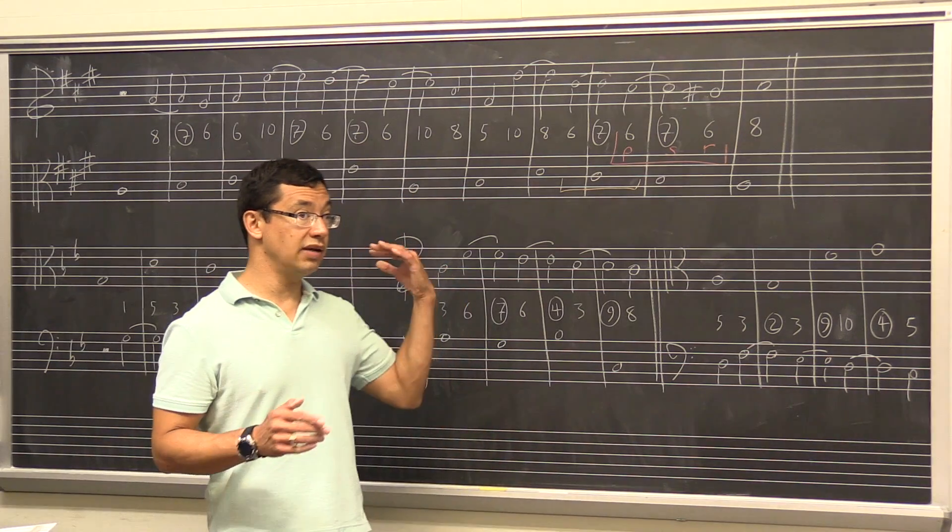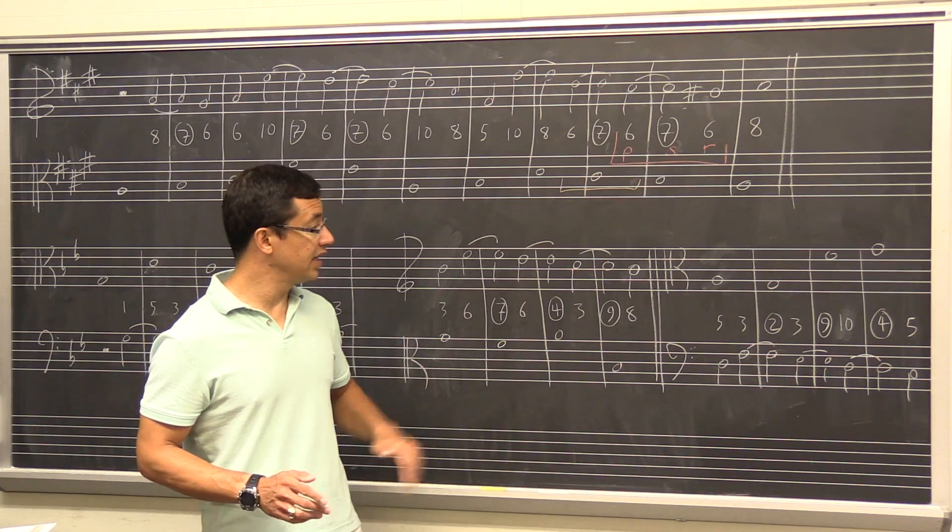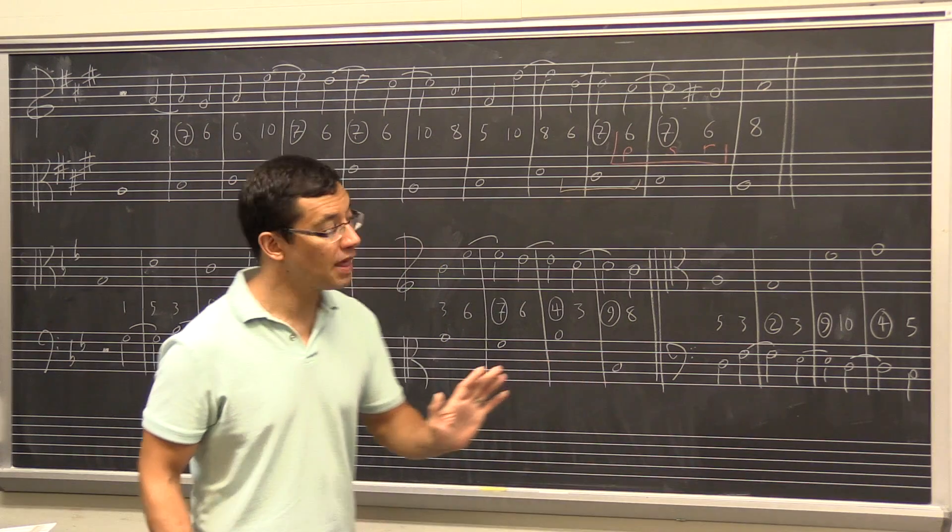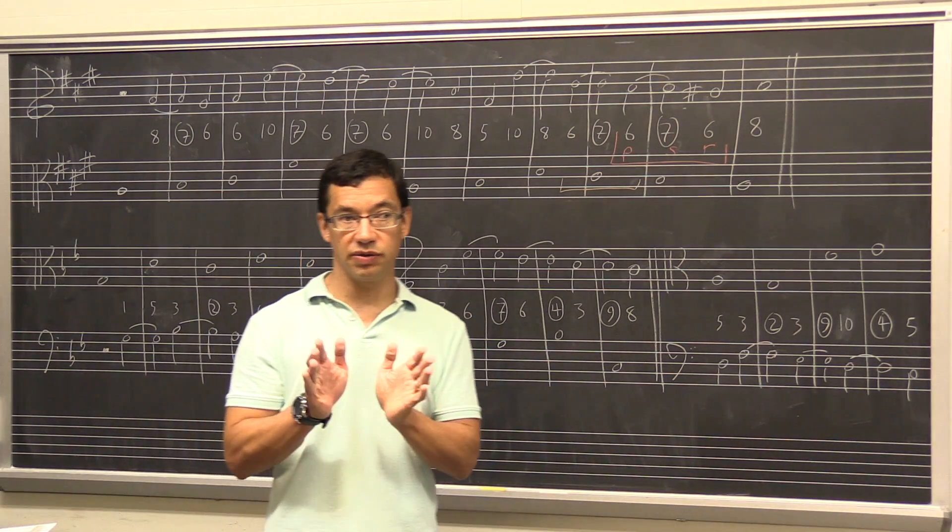So those are our tools. Upper counterpoint: seven-six, four-three, nine-eight. Nine-eight use sparingly. Lower counterpoint: two-three, nine-ten. Four-five use sparingly. Another option, another possibility. So those are the main things we want to work with, our main toolkit.